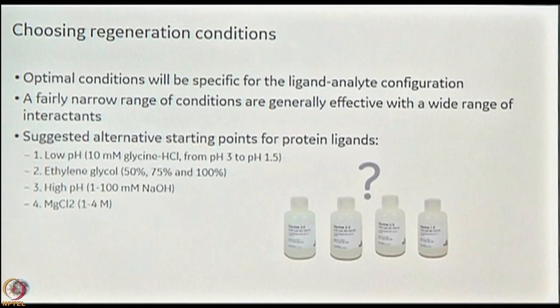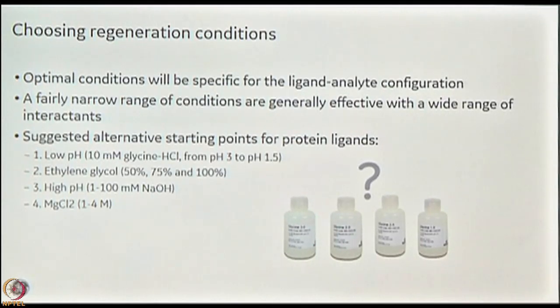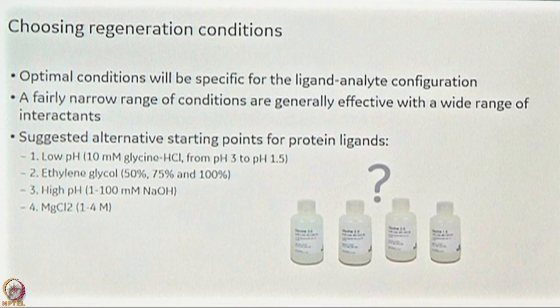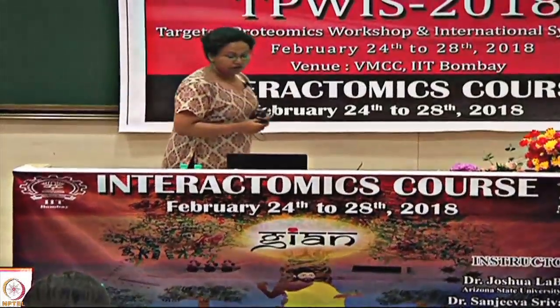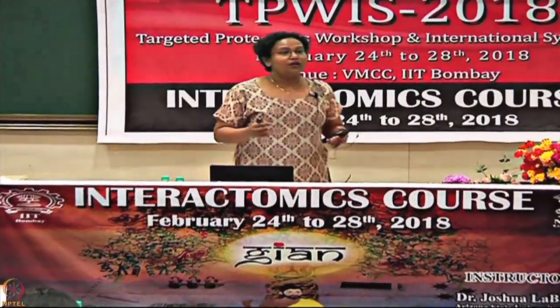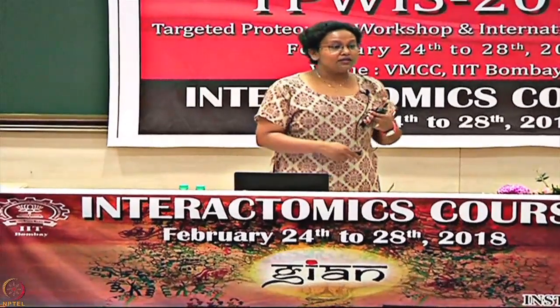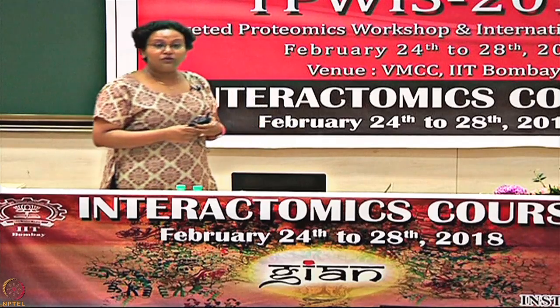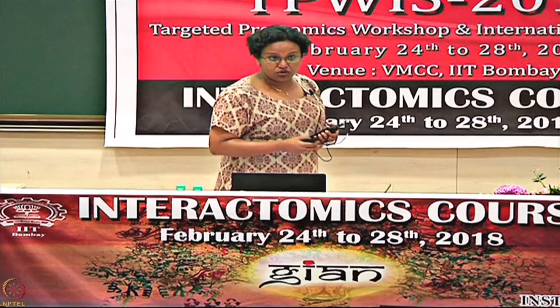Regeneration buffers include a range of options: low pH from 3.5 to 1.5, sodium chloride, detergents, or ethylene glycol — similar to reagents used in downstream processing. To find the ideal condition, there is a scouting wizard that helps determine the optimal pH for regeneration.